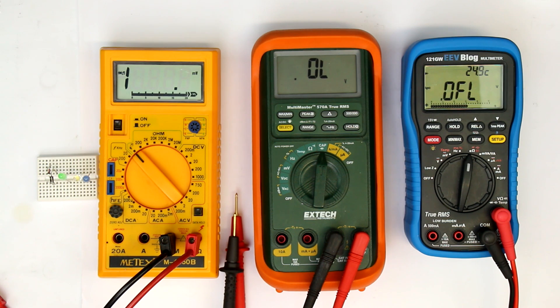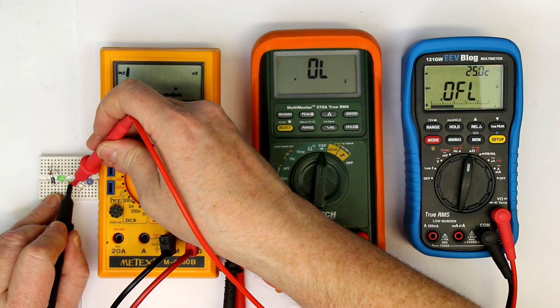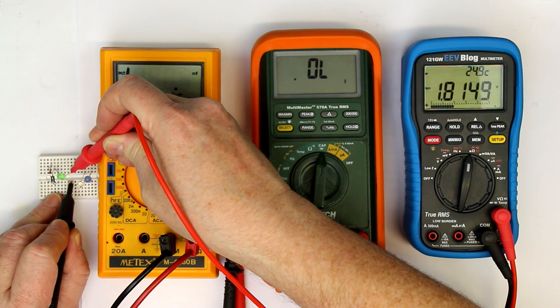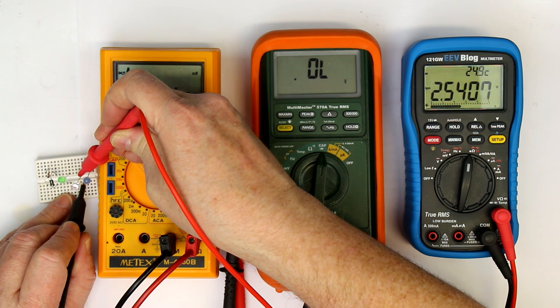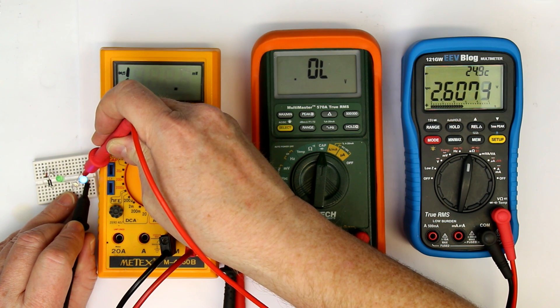And what will the 121 GW give us? Let's start with the green one. And you hear the kind of registering's beep when it has detected a diode. And the white one, no problem, 2.54 volts. And the blue one, 2.6 volts.